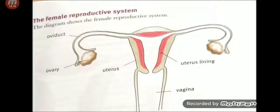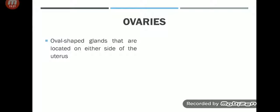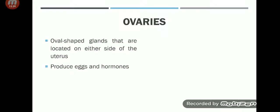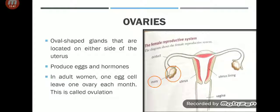Female reproductive system: a simple picture showing the oviduct, ovary, uterus, uterus lining, and vagina. Ovaries are oval-shaped glands located on either side of the uterus. Their function: they produce eggs and hormones. In an adult woman, one egg cell leaves one ovary each month — this is called ovulation. The word comes from 'ovary.' In the picture you can clearly see the two ovaries on each side of the uterus.